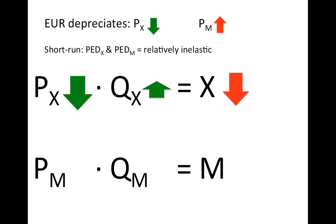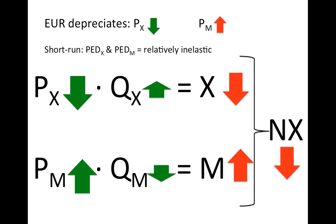In the case of imports, since the price of imports is increasing but we are buying relatively inelastic goods, the quantity of imports will decrease only very slightly. Therefore, the value of imports will actually increase. Since the balance of payments current account is measured as exports minus imports, net exports will be falling in the short run when we depreciate and the PED of exports and imports is inelastic.